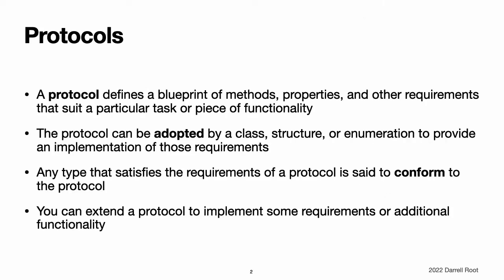Protocols. A protocol defines a blueprint of methods, properties, and other requirements that suit a particular task or piece of functionality. The protocol can then be adopted by a class, structure, or enumeration to provide an actual implementation of those requirements. Any type that satisfies the requirements of a protocol is said to conform to that protocol. In addition to specifying requirements that conforming types must implement, you can extend a protocol to implement some of these requirements or to implement additional functionality that conforming types can take advantage of.